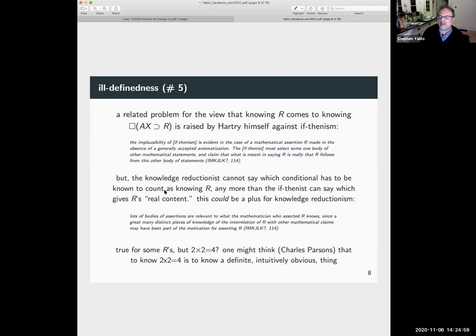But you might think it's different for two times two equals four. One might think, Charles Parsons makes a lot of this, that to know two times two is four is to know a definite intuitively obvious thing by reference to which other mathematical assertions like maybe the axioms of piano arithmetic are evaluated rather than conversely. Russell makes this point quite a bit.